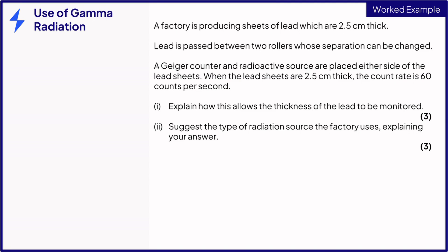A factory is producing sheets of lead which are 2.5 cm thick. Lead is passed between two rollers whose separation can be changed. A Geiger counter and a radioactive source are placed either side of the lead sheets. When the lead sheets are 2.5 cm thick, the count rate is 60 counts per second.